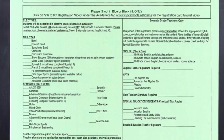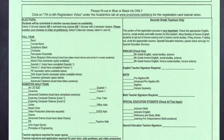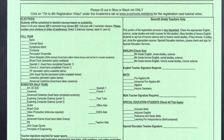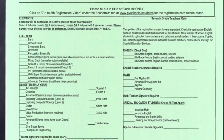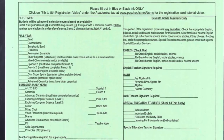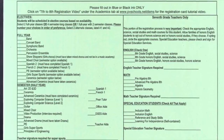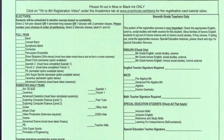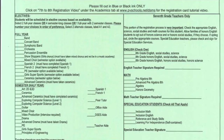On the last line, it says that an application and a signature are required. This is true for video production, for which you should have already interviewed, office aid, Desert Shadows Elementary student aid, and for being a teacher aid. For these classes, you will need an application.